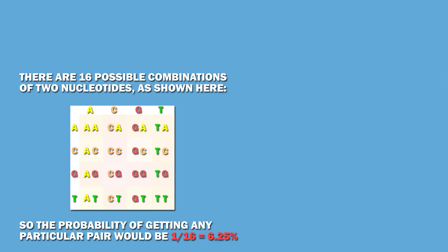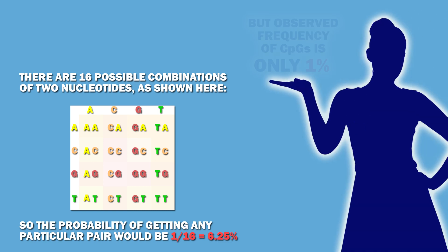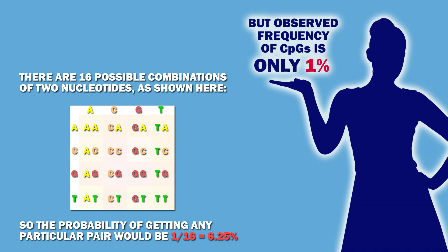Due to random probability, you would expect the frequency of CpGs to be 6.25%. However, the observed frequency in humans is about 1%. To understand why, we first need to discuss the most common single nucleotide mutation.